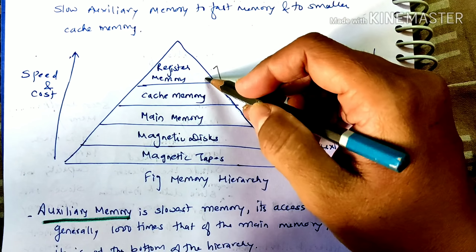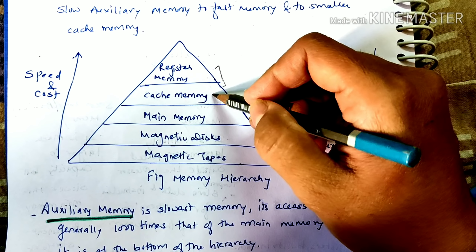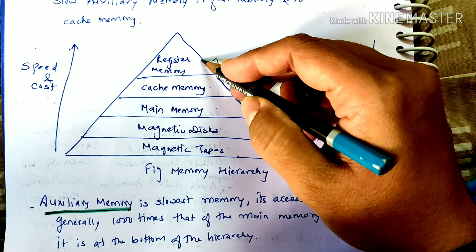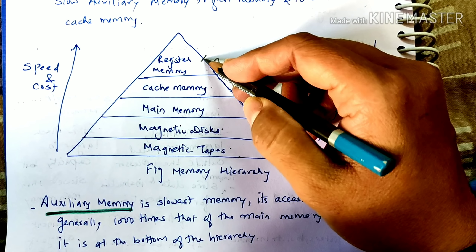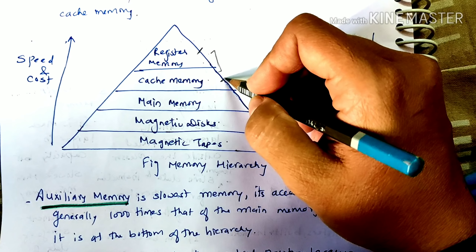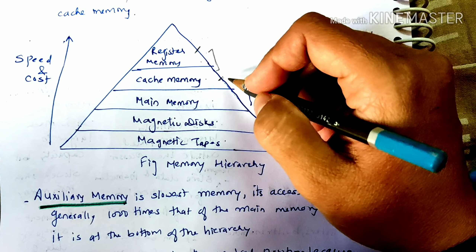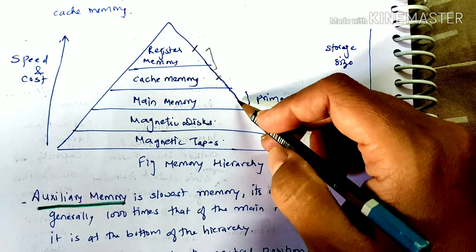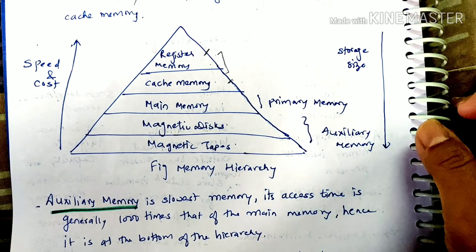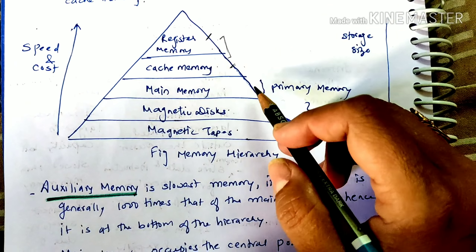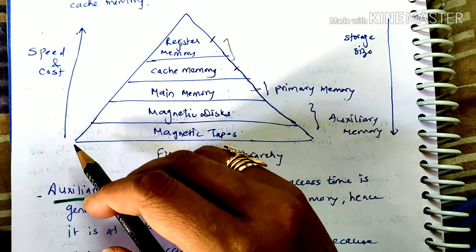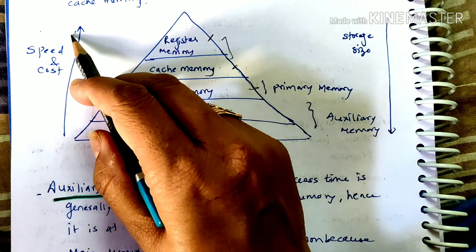In the memory hierarchy, the levels are: register memory, cache memory, main memory, magnetic disk, and magnetic tape. Register memory is inside the processor. Cache memory can be used externally or is inbuilt in some processors. Main memory is primary memory. Magnetic disk and magnetic tapes form auxiliary memory. If you look at the hierarchy, speed and cost increase as you go upward.